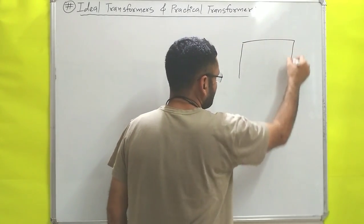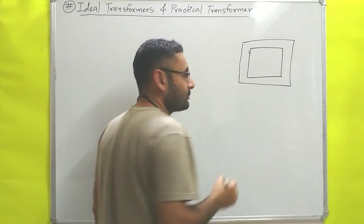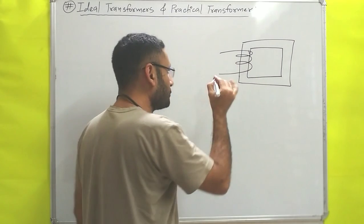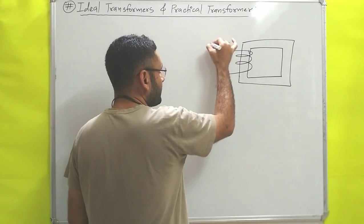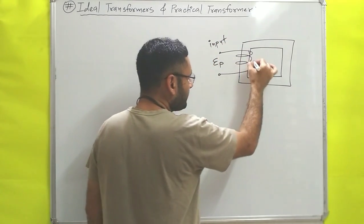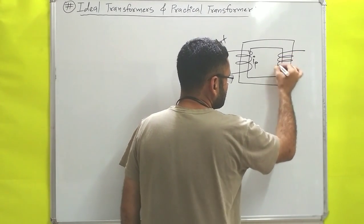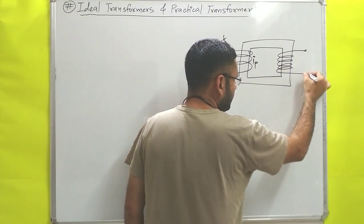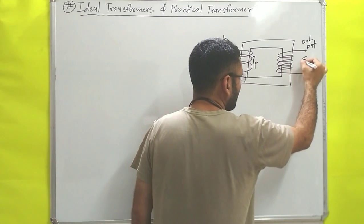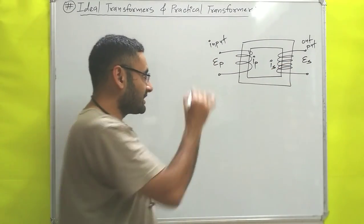Up till now we have discussed that in the transformer one core is there, and that core is made of soft iron which is a ferromagnetic material. After that it has one primary winding, and to the primary winding we are supplying the voltage input — let's say the voltage input is Ep and current flowing in the primary winding is Ip. After that it has one secondary winding, and from that secondary winding we are getting voltage output Es.